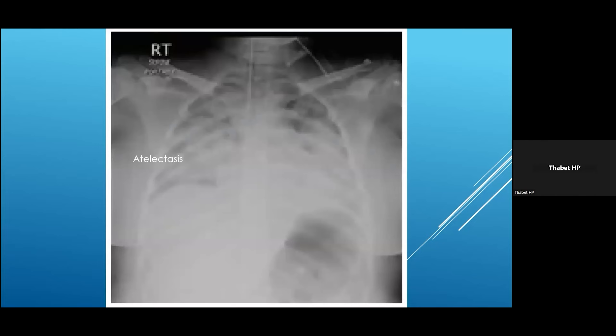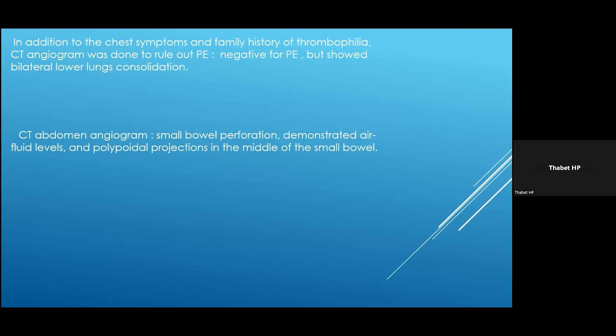Her chest X-ray taken almost one day after presenting to the ER showed atelectasis. She also had a family history of some congenital anomalies in her coagulation. We were uncertain about the diagnosis so we proceeded with a CT angiography, mainly to rule out pulmonary embolism. The CT angio came back negative for pulmonary embolism but showed bilateral lower lung consolidation. A CT abdomen done in the same setting showed small bowel perforation, demonstrated air-fluid levels, and a polypoidal projection in the middle of the small bowel.